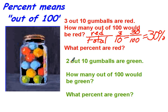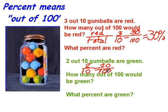If 2 out of 10 are green, then 20 out of 100 are green. Again, your knowledge of equivalent fractions — times 10, times 10 — gives you 20 out of 100, which is equivalent to 20%.